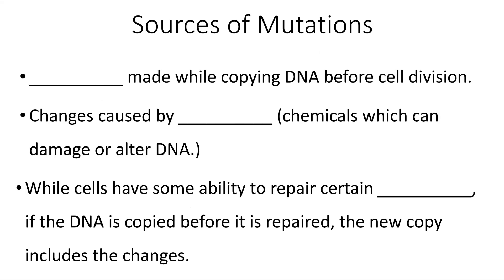So where do these mutations come from? Sometimes there will be mistakes made while copying DNA before cell division — that's something we'll be talking about in the next module. Sometimes there will be specific physical or chemical substances in an environment that damages DNA. We call these materials mutagens.